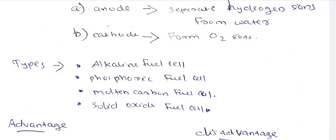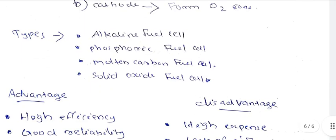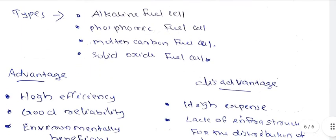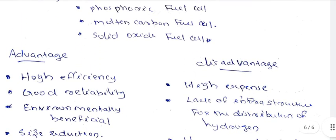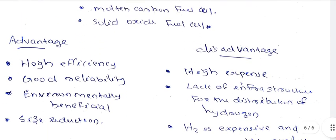Different types of fuel cells include: alkaline fuel cells, phosphoric fuel cells, molten carbonate fuel cells, and solid oxide fuel cells. Advantages include high efficiency, good reliability, and being environmentally beneficial.